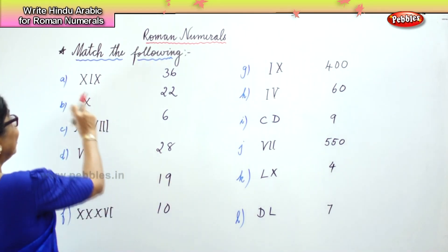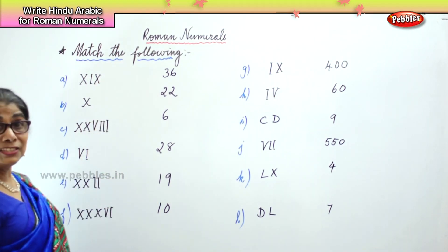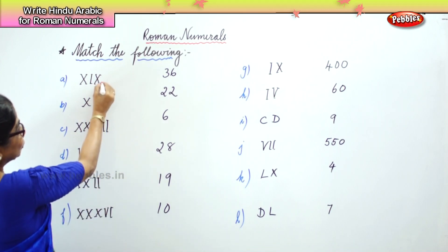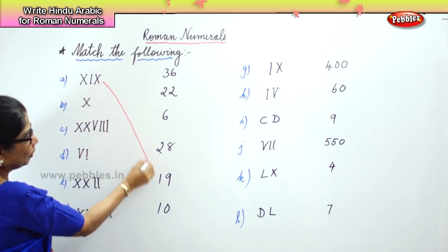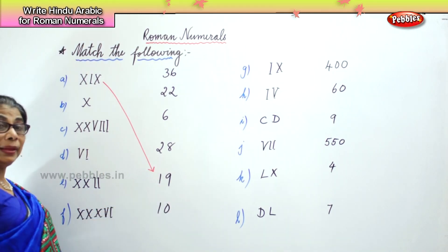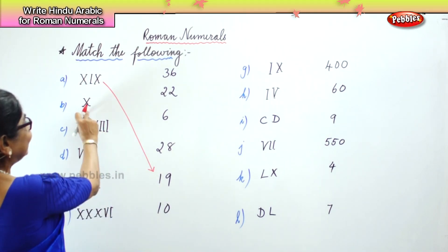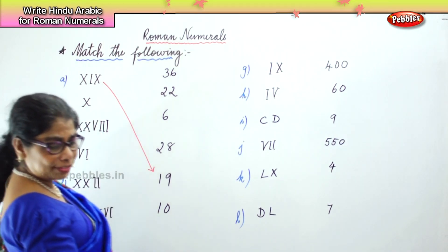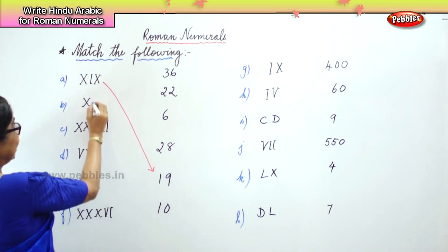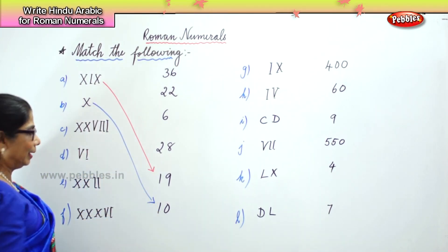Now I have here 10 and 9, that is 19. So where is 19 here? This is Roman numeral 19 and this is Hindu-Arabic 19. This is easy. You have 10 and here is the 10 — Roman numeral 10, Hindu-Arabic 10.